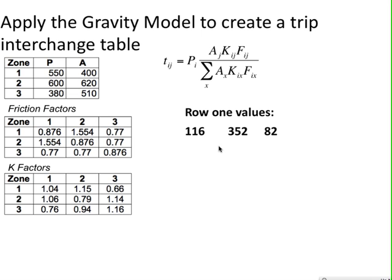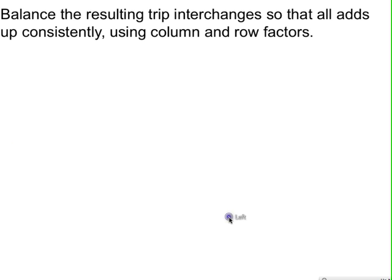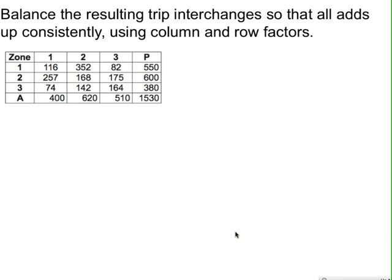Taking these three values — T11, T12, and T13 — we get 116, 352, and 82. These go into the trip interchange matrix, where rows represent origin zones and columns represent destination zones. From zone 1 to zone 1 is 116, from zone 1 to zone 2 is 352, and so on. The rows add up correctly — 550, 600, and 380 — but looking at the columns, they don't add up to the expected attraction values.